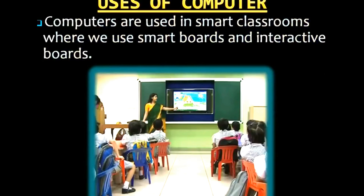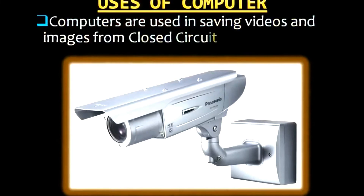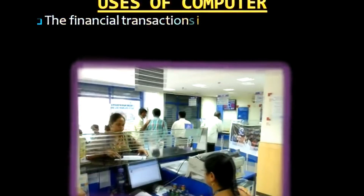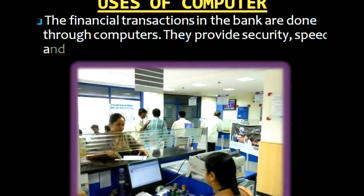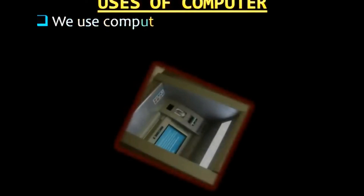Uses of computers: computers are used in smart classrooms with smart boards and interactive boards. Computers are used in saving videos and images from closed-circuit TV. The financial transactions in banks are done through computers, providing security, speed, and convenience. We can take online exams and get instant results. We also use computers in automatic machines and robots, which are controlled by computer software.